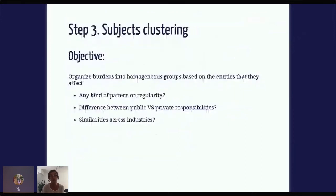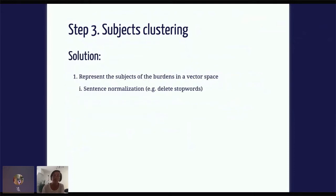The final step is a clustering analysis of the subjects. The objective here is to organize the burdens into homogeneous groups based on the entities that they affect. At this point, we're not entirely sure what to expect from the results of the analysis — that's why we use clustering. We're looking for any kind of pattern or regularity, and we would like to see a difference between public and private responsibilities if they exist, and maybe similarities across industries. Before we can do the clustering analysis, we need to represent subjects of the burdens in a vector space — some numbers instead of strings.